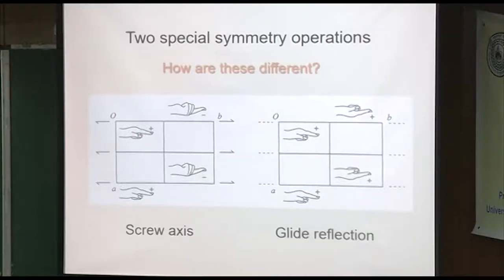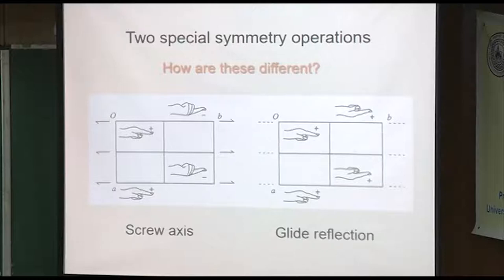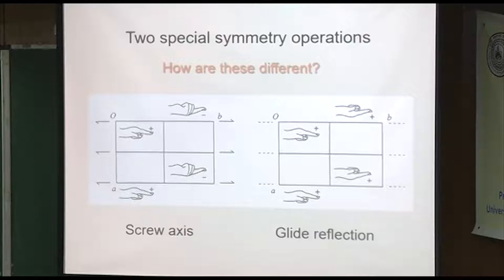The mirror: this is a symbol for a glide. In this case it's not turned around, it's just reflected, but it's still a half translation. The screw axis is much easier to understand in practice than the glide. The way it's depicted in the space group symbol is the key, but it becomes a little complicated because there's more than one way to reflect, whereas the screw axis is definitive.